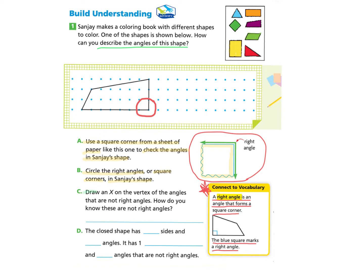Part C asks us to draw an X on the vertex of the angles that are not right angles. Let's draw the X's on those vertices. This is not a right angle, this is not a right angle, and this is not a right angle — because when we tried the corner of a piece of paper, those did not match up. They are not the same shape as the square corner.